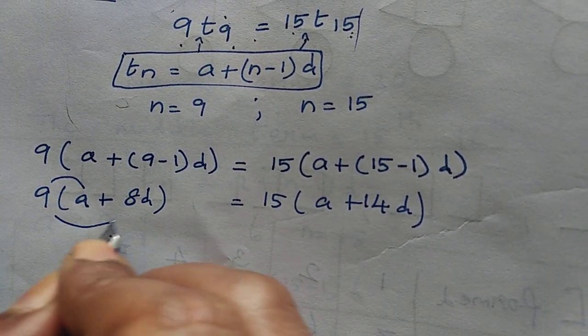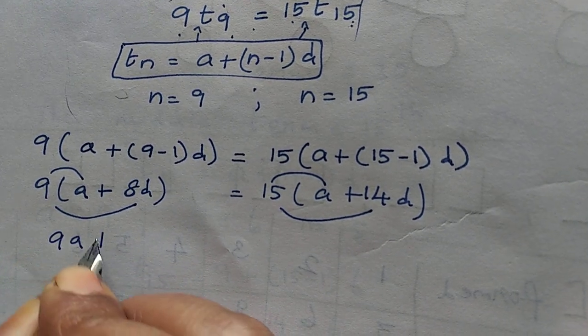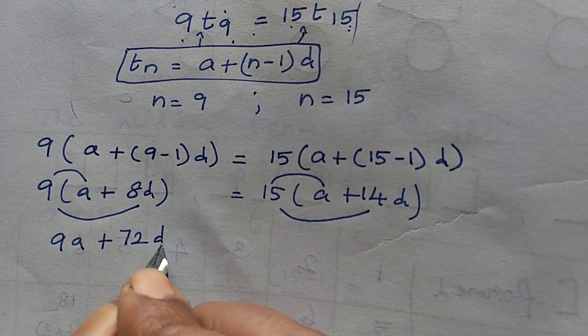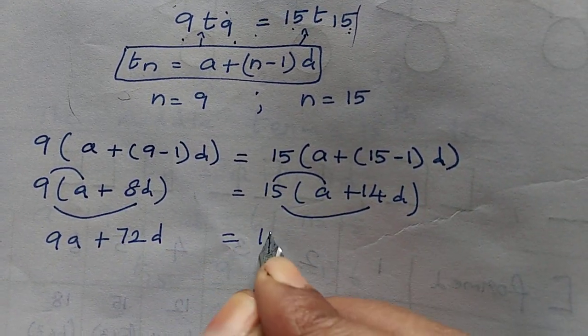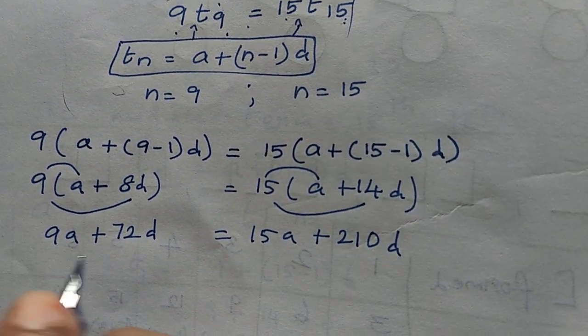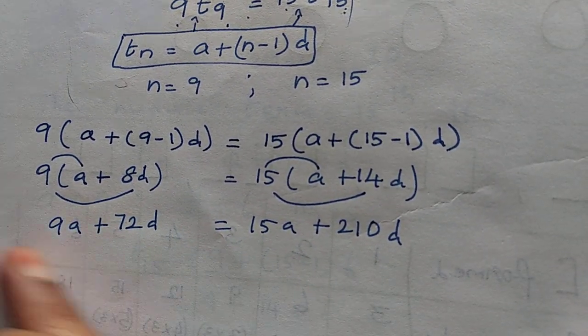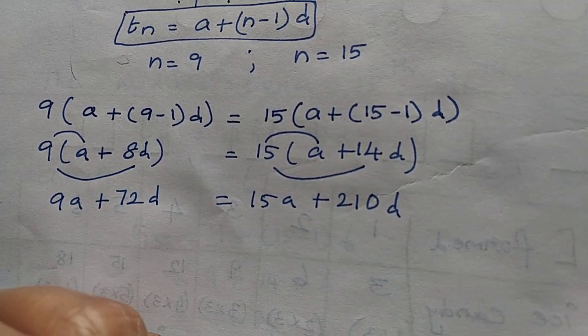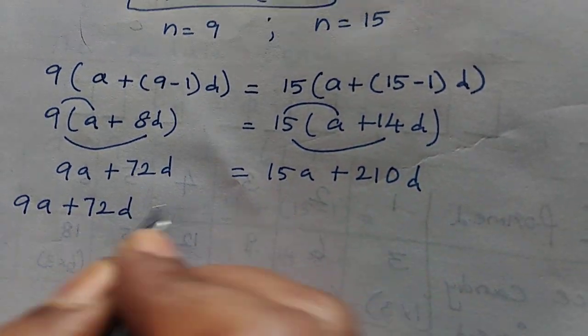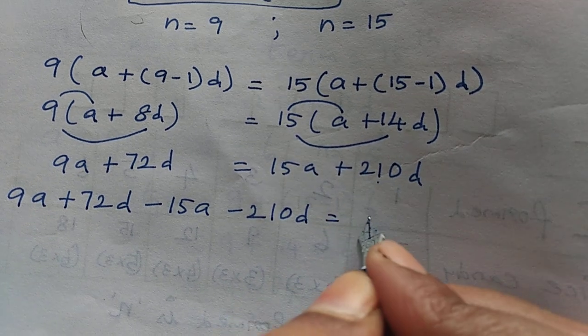Next you will do binomial multiple. 9 into a, 9 into 8, 9 times 8 is 72d. 15 into a, 15a plus 15 into 14, 210d. Make one side equal to 0. 9a plus 72d minus 15a minus 210d equal to 0.